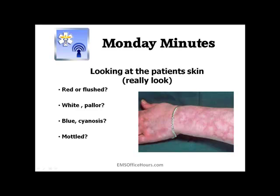Pallor, that white color of the skin, is going to occur if you've got arterial blood flow slowing down to certain parts of the body — things like a blood clot or massive bleeding. In addition, hypothermia is also going to give you that pallor look, as the body shunts blood to those core organs it needs to survive and takes blood away from the extremities.